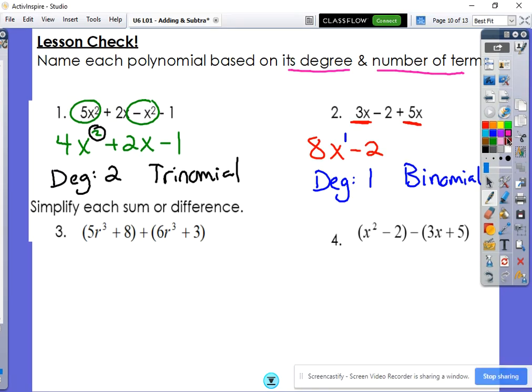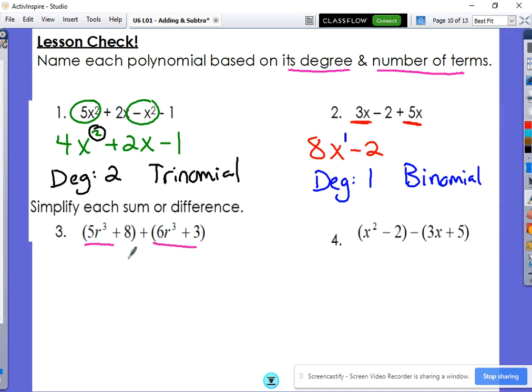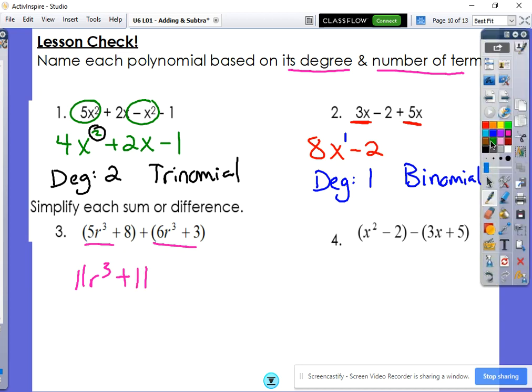Okay. So last but not least, if we're adding these together, simply look for those like terms. So 5r cubed plus 6r cubed gives me 11r cubed. And then positive 8 plus 3 gives me 11 as well. So very easy there with the sum. Remember, that's the parent who lets you do whatever you want.